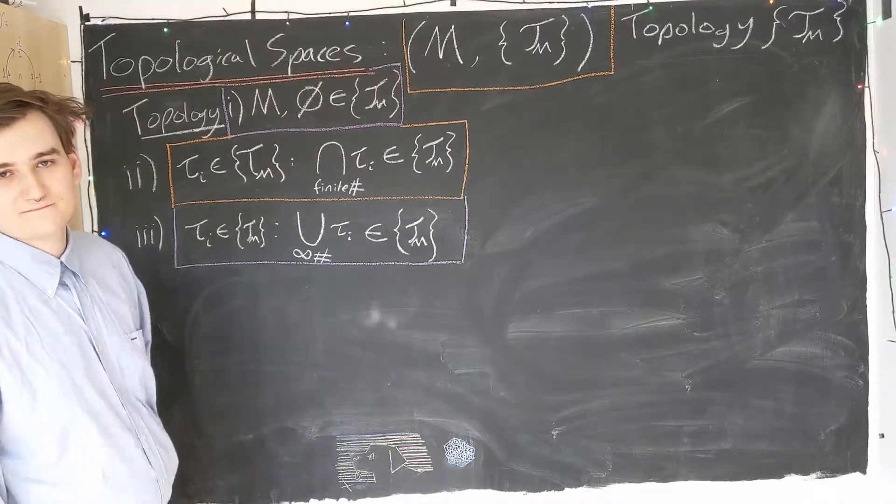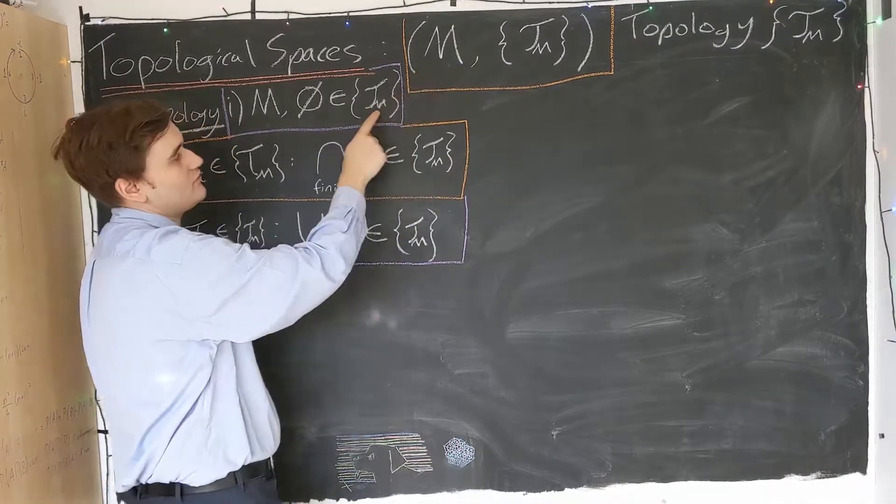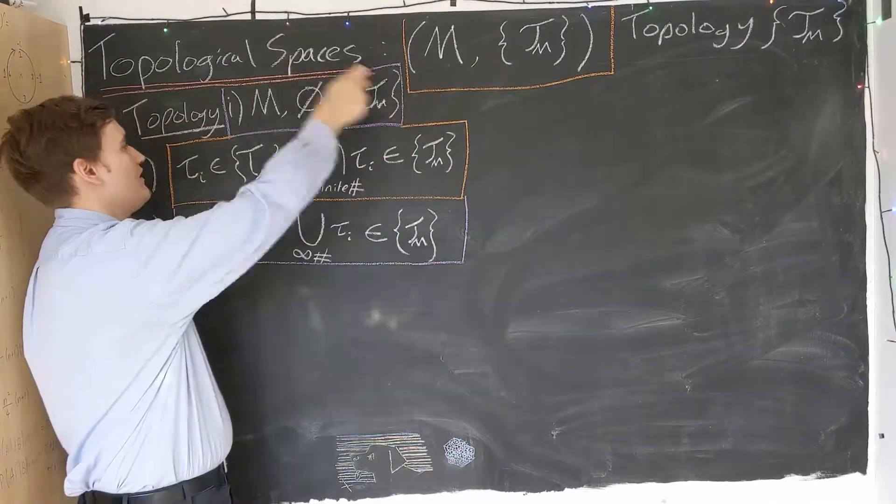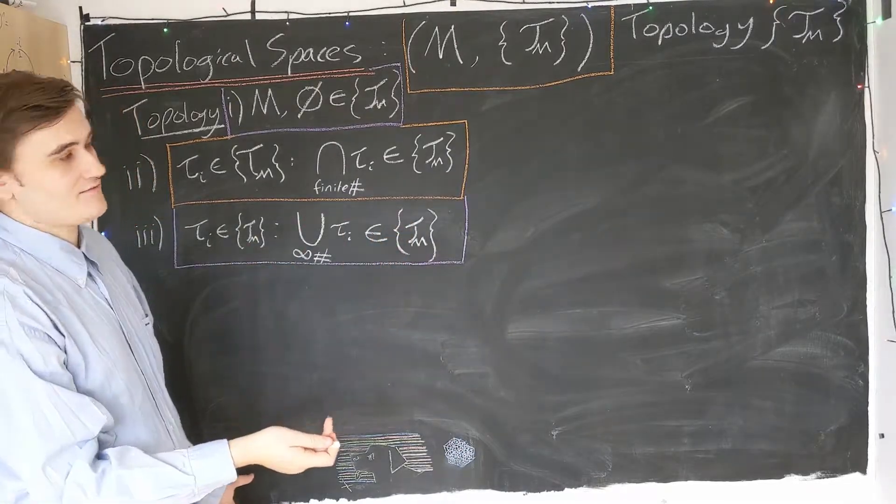So that's the definition. Any family of subsets of M, which we're calling a topology, if it satisfies these three axioms, it's a topology for the set M.